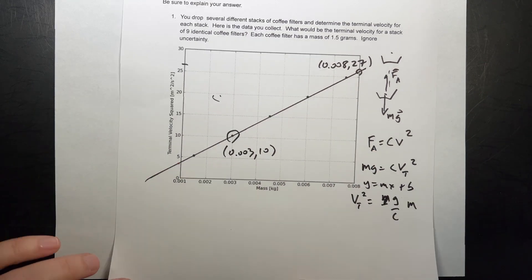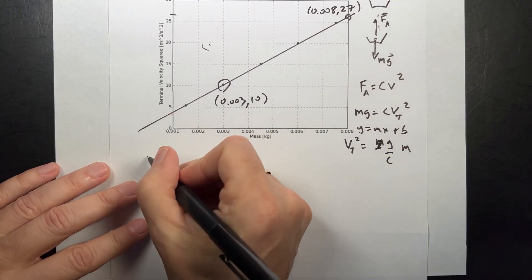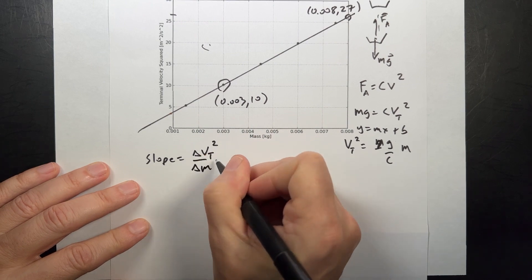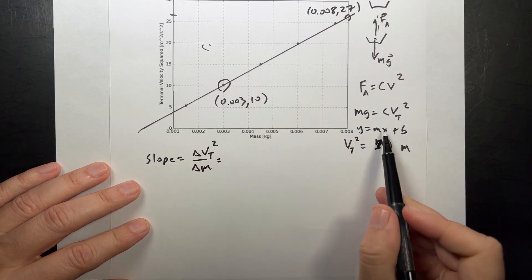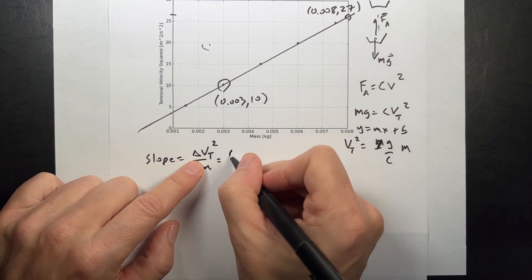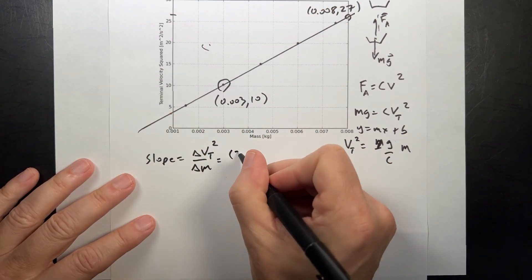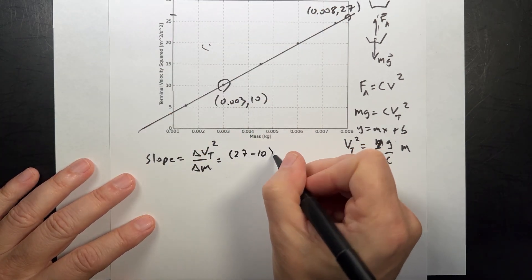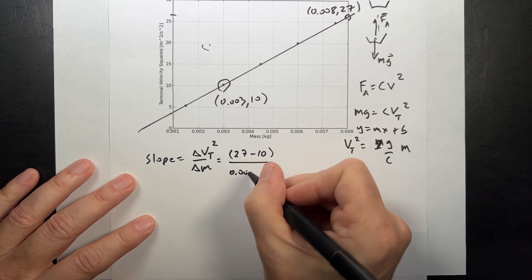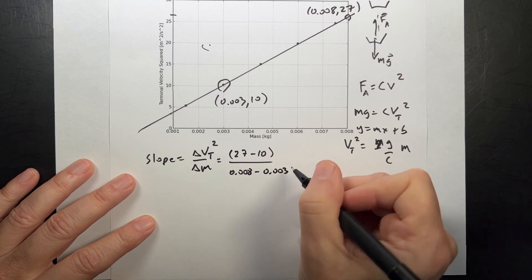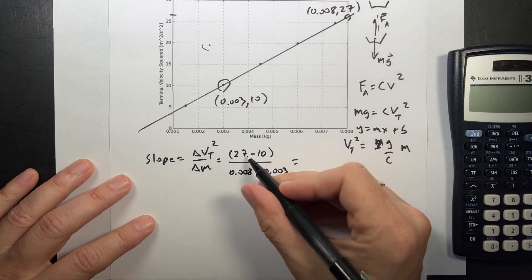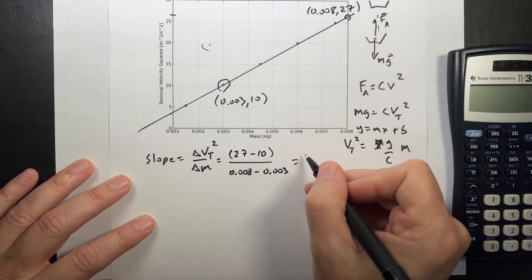Now I can find the slope. So let's find the slope. Slope is going to be the change in the terminal velocity squared divided by the change in mass, just like we have in this equation over here, right, for the equation of a line. So let's do the change in velocity squared. This is going to be 27, I've already squared it, minus 10, and I'm going to leave off the units, divided by the change in mass, which is going to be 0.008 minus 0.003. So that's going to give me my slope.